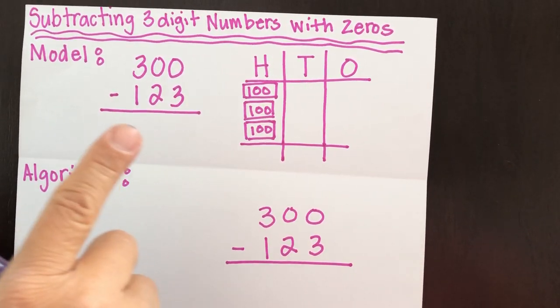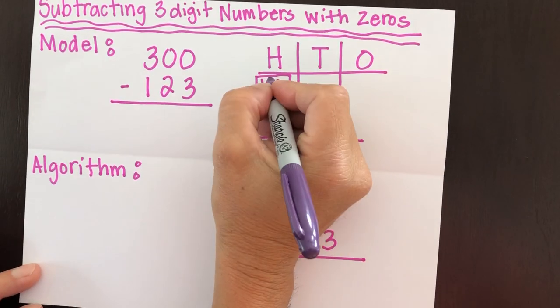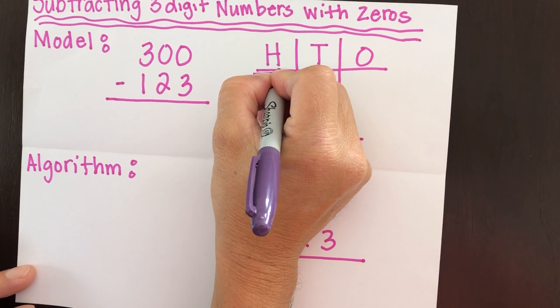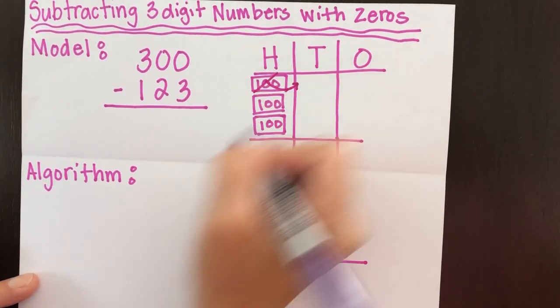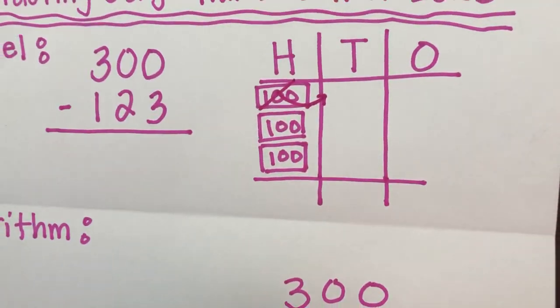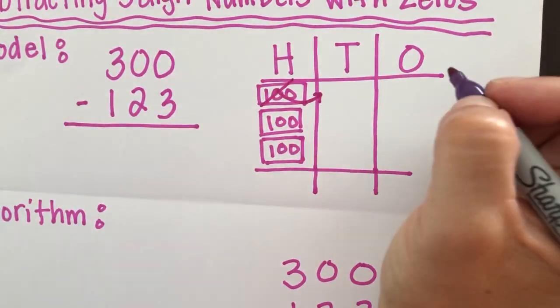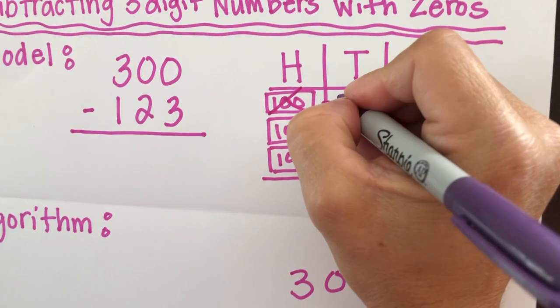And we can subtract one from 300, but we still have to perform these operations first. So that means we're going to have to regroup from our hundreds. So I'm going to cross this 100 out, and I'm going to regroup it here in the tens column. And I'm going to draw 100. So here's how we do it in the tens. We count by tens.